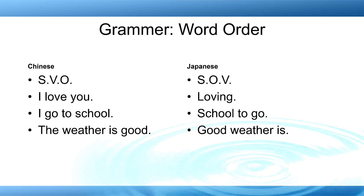But in Japanese it's quite different. The word order is subject, object, and verb. The language itself is a kind of totally different system. So if you want to say 'I love you,' translated directly into English it's kind of like 'loving.' And 'I go to school' is 'go to school go to.' And 'the weather is good' is 'good weather is' — something like that.